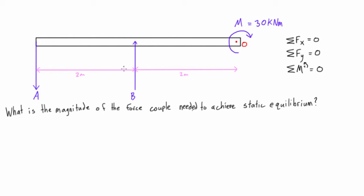We can tell right away that there are no forces acting in the x-direction so we're going to be okay there. We also know that in order for two forces to form a force couple, their magnitudes have to be equal and opposite.